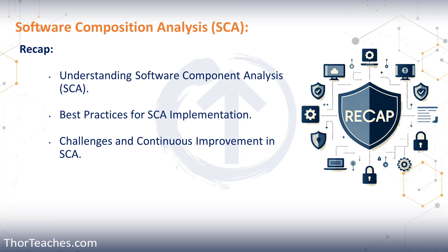Remember that SCA is not the solution to everything — it's part of a comprehensive application security program. SCA only focuses on commercial off-the-shelf and open source software; anything we have developed ourselves, it cannot check for. We need to tweak the system over time to avoid false positives and false negatives, and whenever we do get them, we need to go in and manually verify those findings and adjust the settings accordingly. As SCA continues to evolve, our organization must stay informed about the latest developments and continually improve our processes based on feedback and lessons learned.